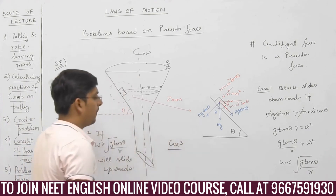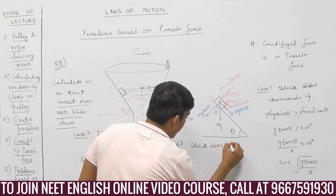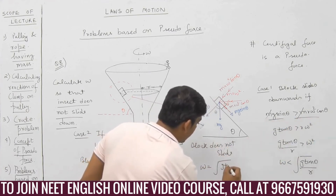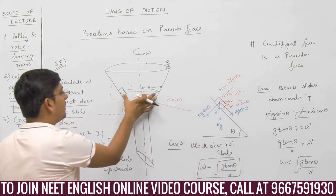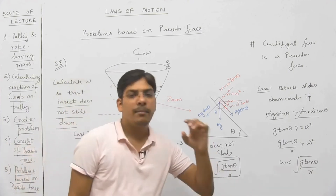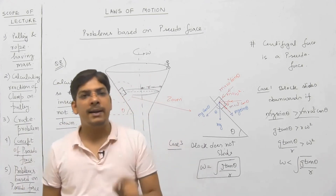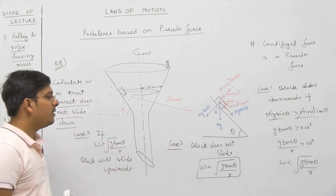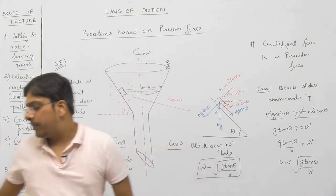Case 3: block does not slide if the two forces are equal in magnitude. That means omega = √(g·tanθ / r). This is the value of omega; small r is the radius of the circle. So if the value of omega is √(g·tanθ / r), the block lying on the inclined surface of the funnel will remain at rest — the insect will not slide upward or downward. This was also a very good question based on pseudo force involving centrifugal force. Kindly note down the solution, my dear students.